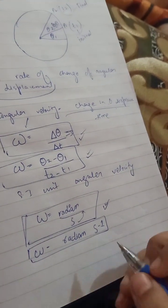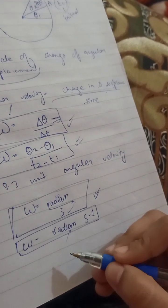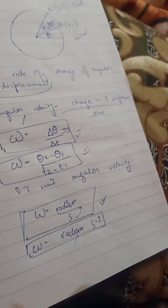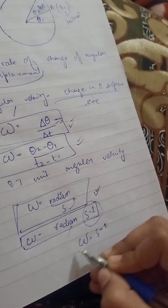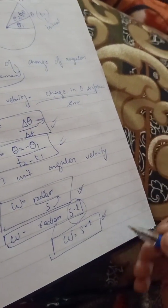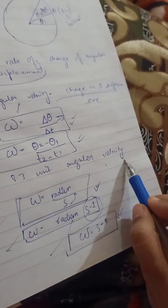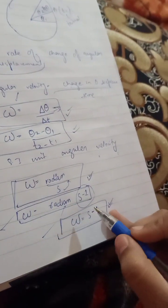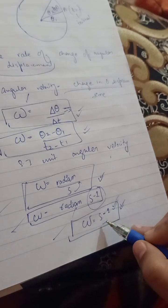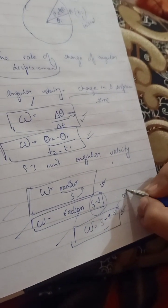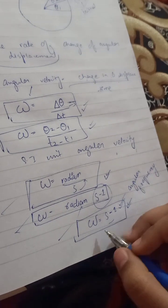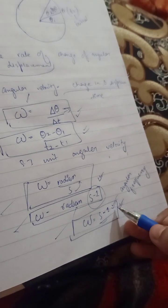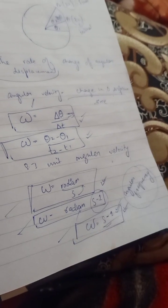If radian does not appear in an answer, we can also write the unit as s⁻¹, that is second inverse. So these three — radian per second, radian s⁻¹, and s⁻¹ — are the SI units of angular velocity. Also, since the unit of frequency is the same as angular velocity, angular velocity is also called angular frequency.